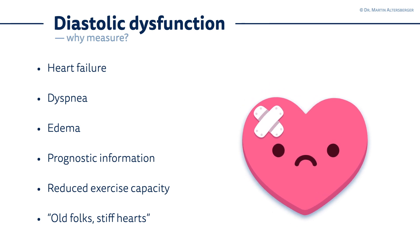Why should we measure diastolic dysfunction? Well, in case of heart failure — the so-called heart failure with preserved ejection fraction — diastolic dysfunction and the stiff hearts play an essential role. Furthermore, it can be responsible for dyspnea, so patients with diastolic dysfunction can be symptomatic. You can find peripheral edema. It gives a lot of information about the prognosis of the patient, and we have to always think that patients with diastolic dysfunction might have a reduced exercise capacity.